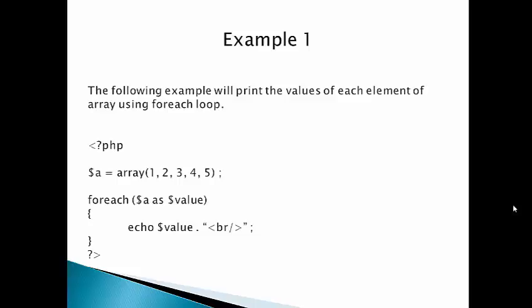For each loop, we have a syntax with parentheses. First we have the array — here it is $a — then we have the keyword 'as', followed by $value. $value is the variable in which we assign the value of each element of the array in each iteration. In each iteration, the variable changes — this automatically assigns the value to the variable.